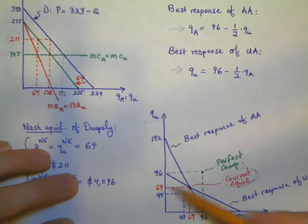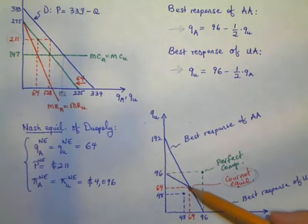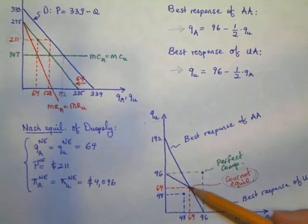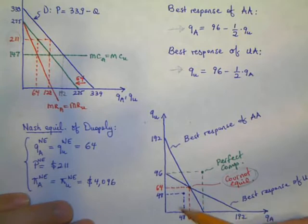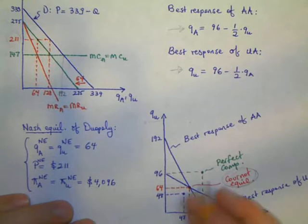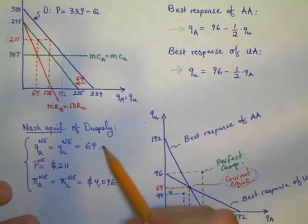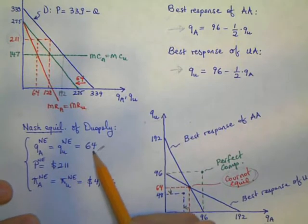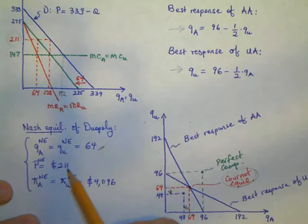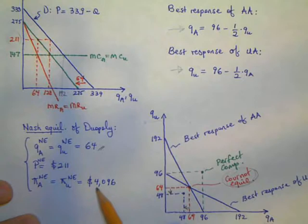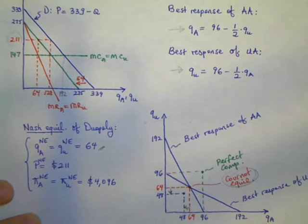But this is not the case in the Cournot game. We have both firms being oligopoly firms and they will produce 64 each. If these firms were producing the monopolistic output, which is 96 total, we would expect them to act like a cartel, both reducing their output significantly. So our Nash equilibrium has American Airlines and United Airlines producing 64 units each, the Nash equilibrium price is $211, and they both earn $4,000 profit each.